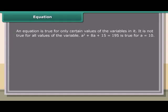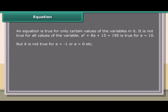Equation: An equation is true for only certain values of the variables in it — it is not true for all values. For example, a² + 8a + 15 = 195 is true for a = 10, but not for a = −1 or a = 0, etc.